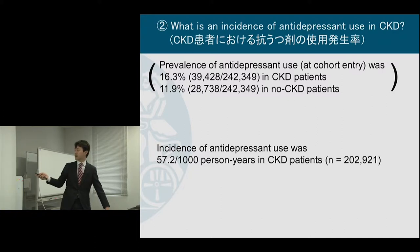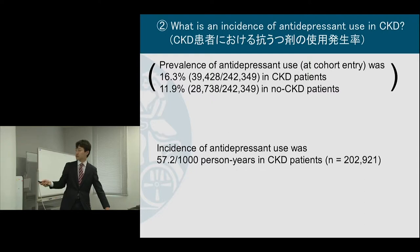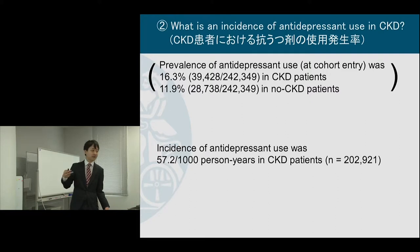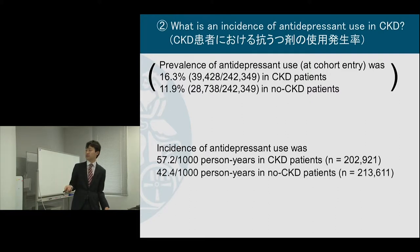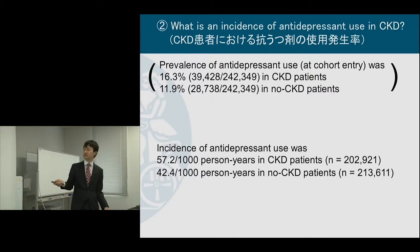This number is after subtracting prevalent users — so just incident users. I repeated the analysis in the comparison cohort, and this was 42.4. So obviously, both in terms of prevalence and incidence, patients with CKD were more likely to receive antidepressants.